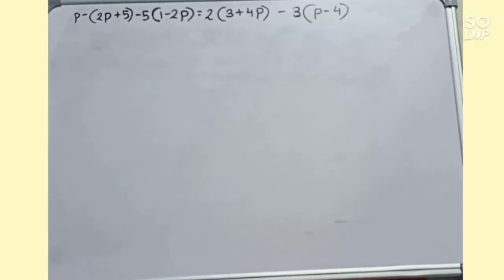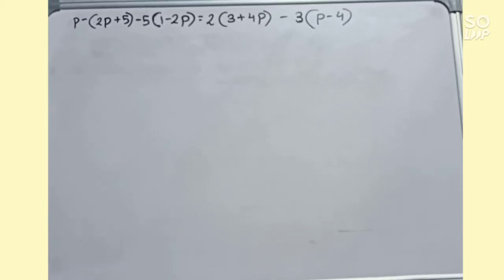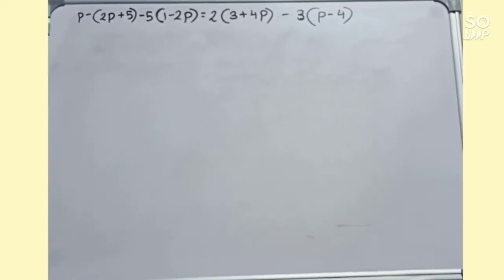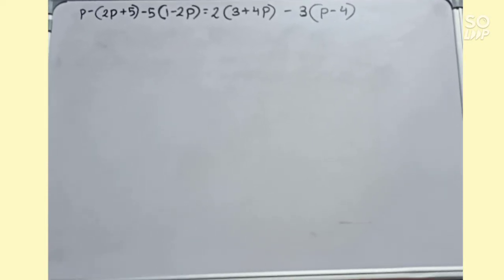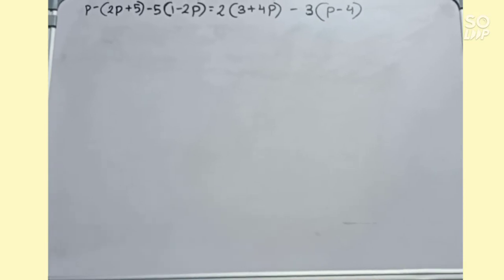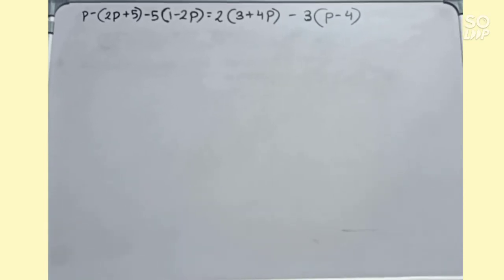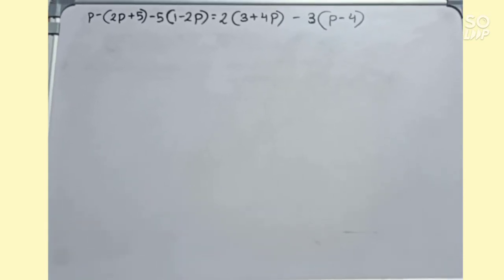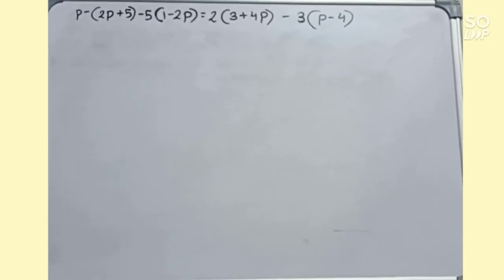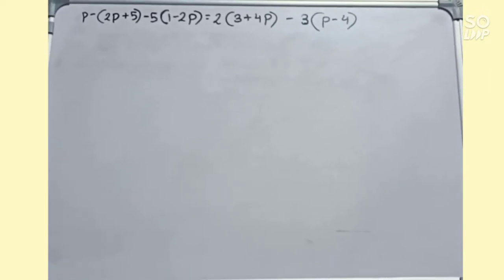Welcome to this video. In this video, our question is P minus 2(P plus 5) minus 5(1 minus 2P) equals 2(3 plus 4P) minus 3(P minus 4). We have to evaluate this.